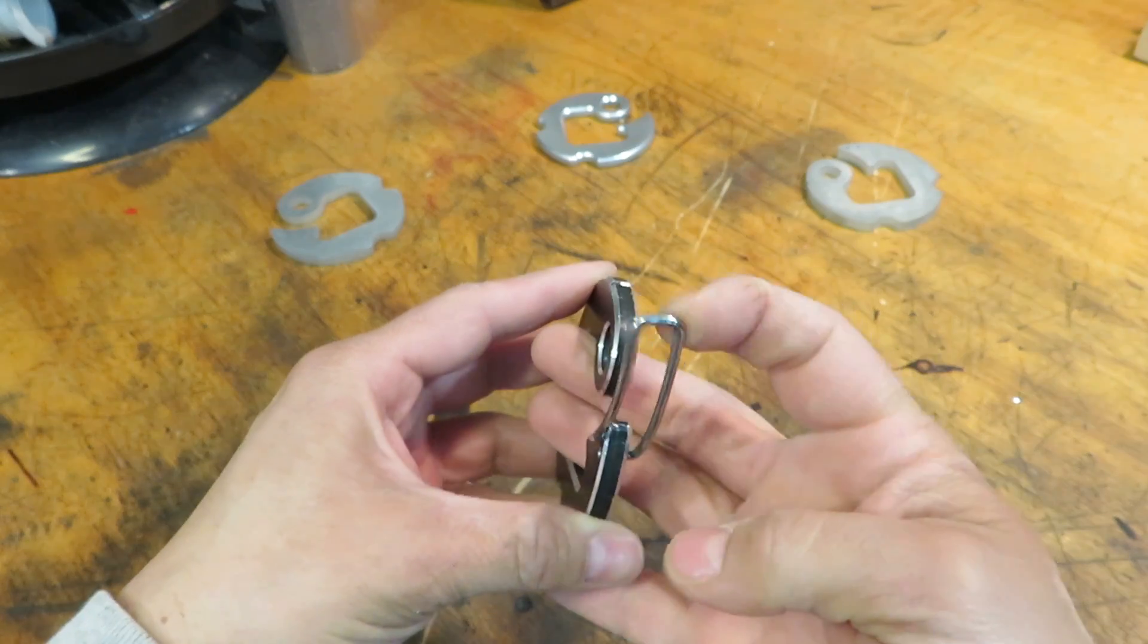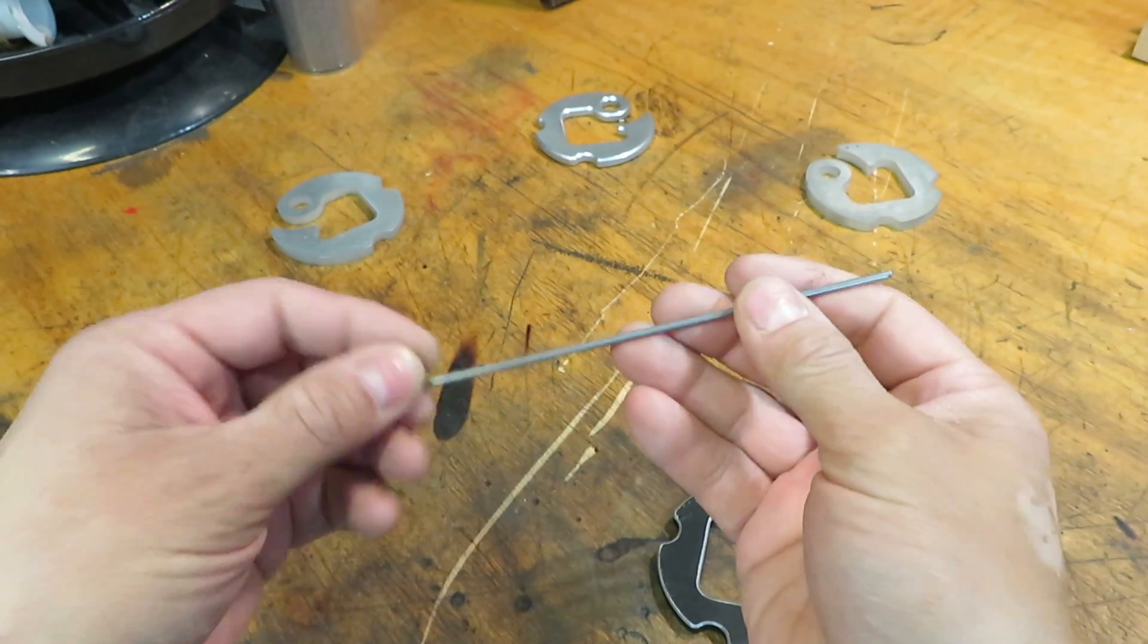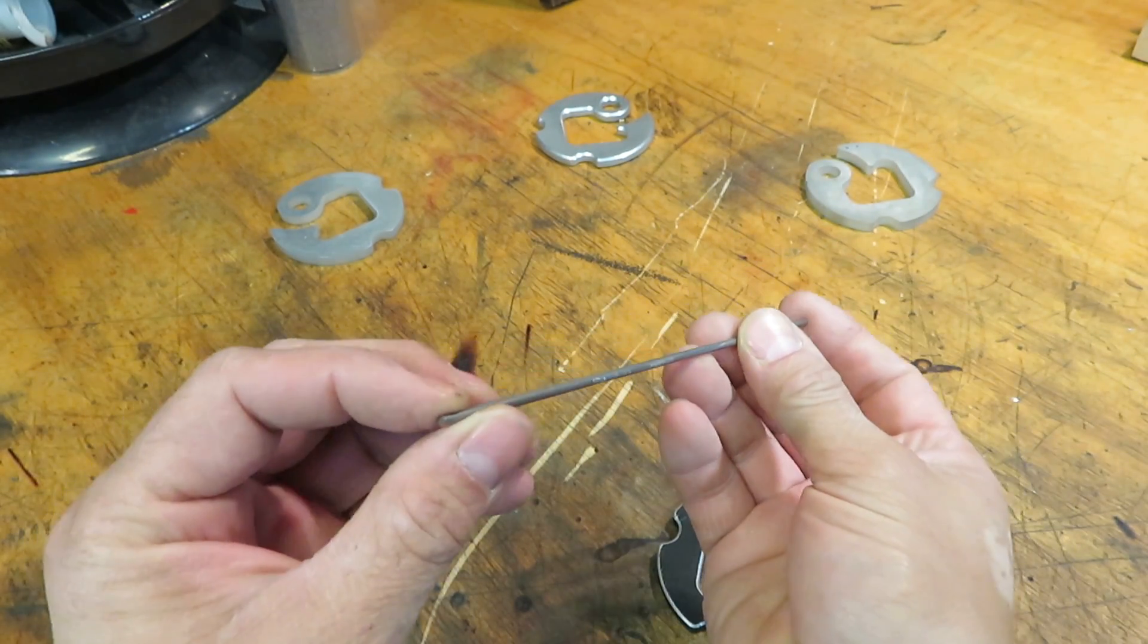This is a spring gate that I made by hand and this is the type of wire that I use to form it.